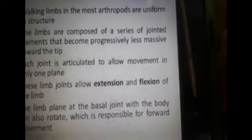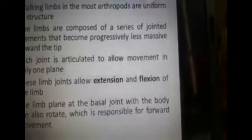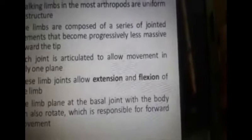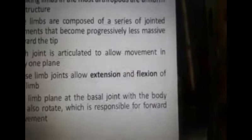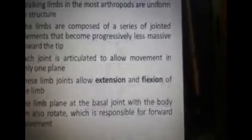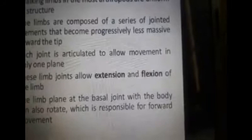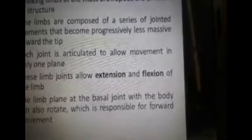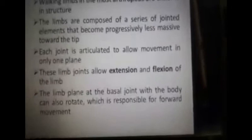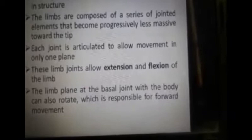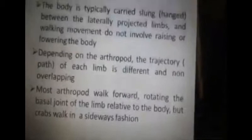Walking limbs in most arthropods are uniform in structure. The limbs are composed of a series of jointed elements that become progressively less massive toward the tip. Each joint is articulated to allow movement in only one plane. These limb joints allow extension and flexion of the limbs. The limb plane at the basal joint with the body can also rotate, which is responsible for forward movement.